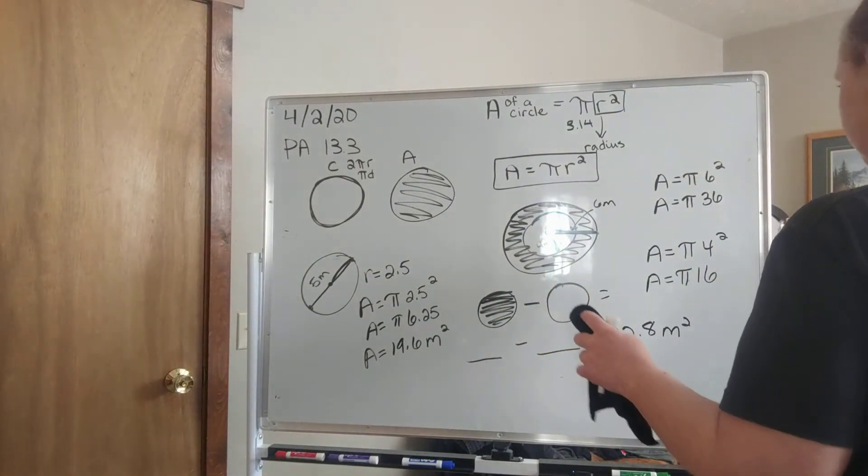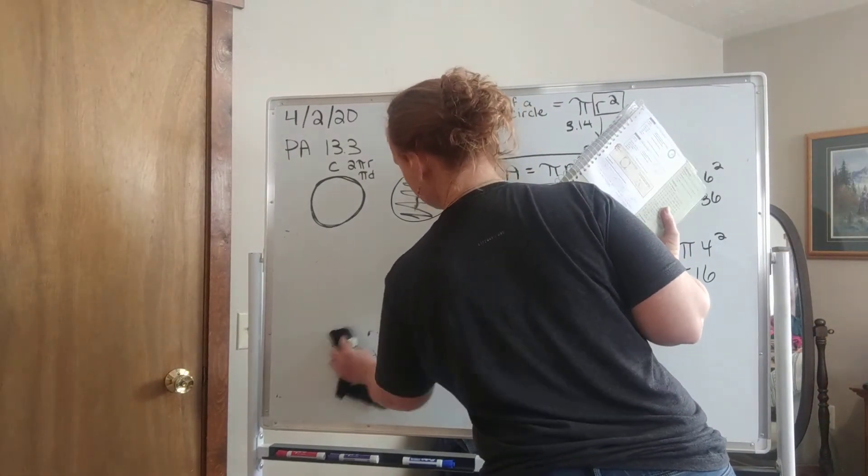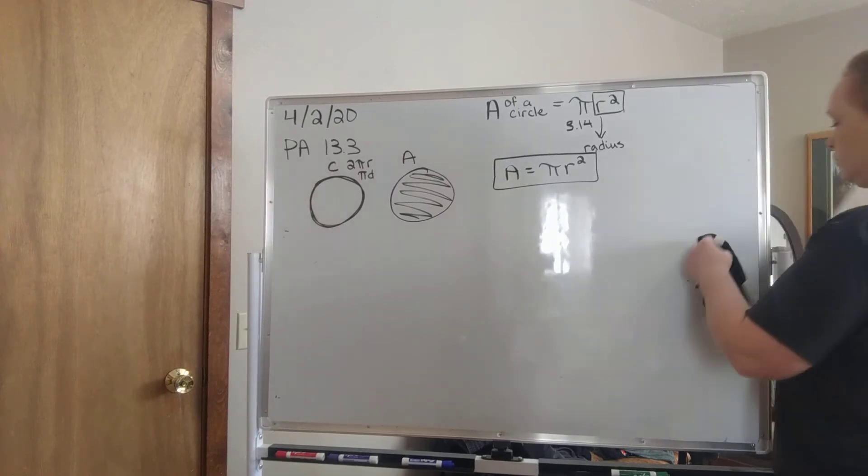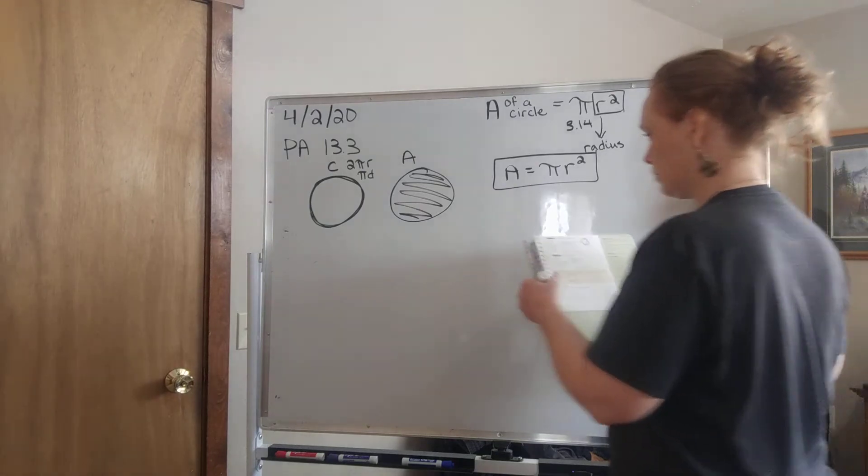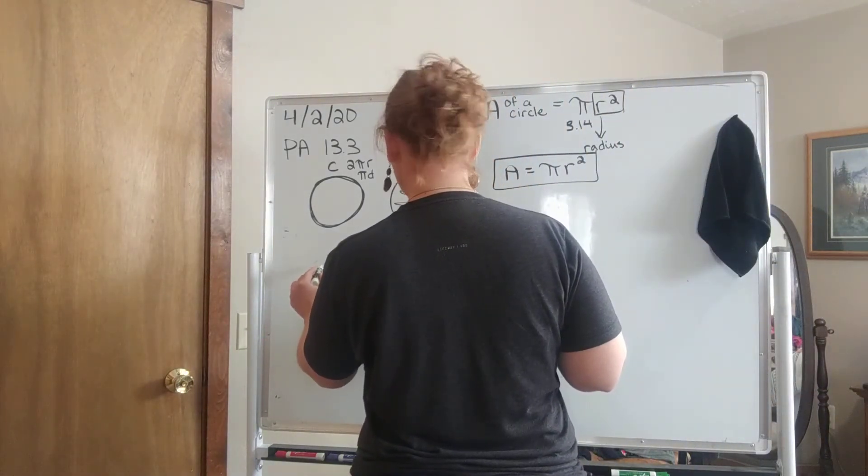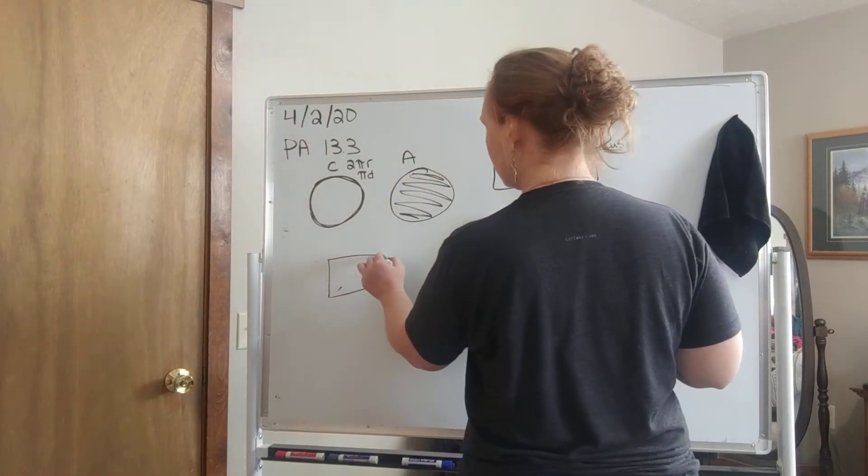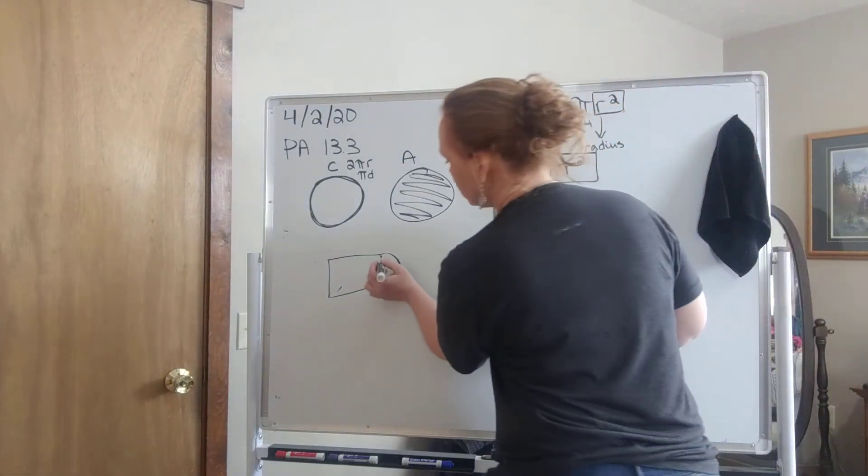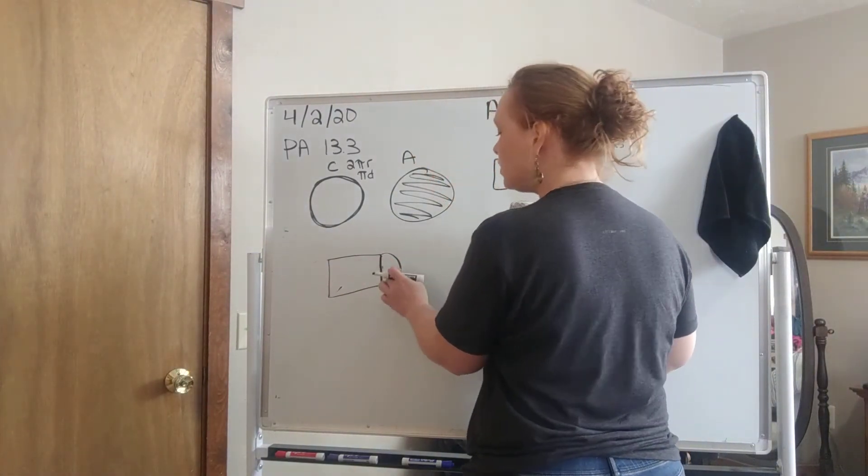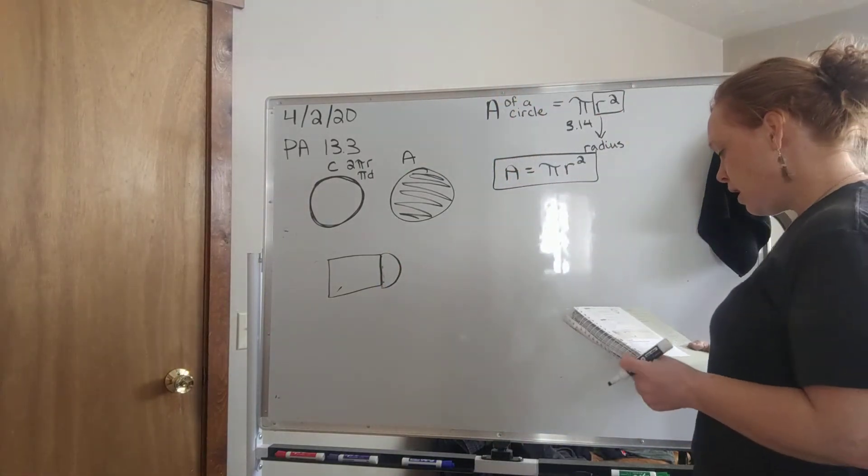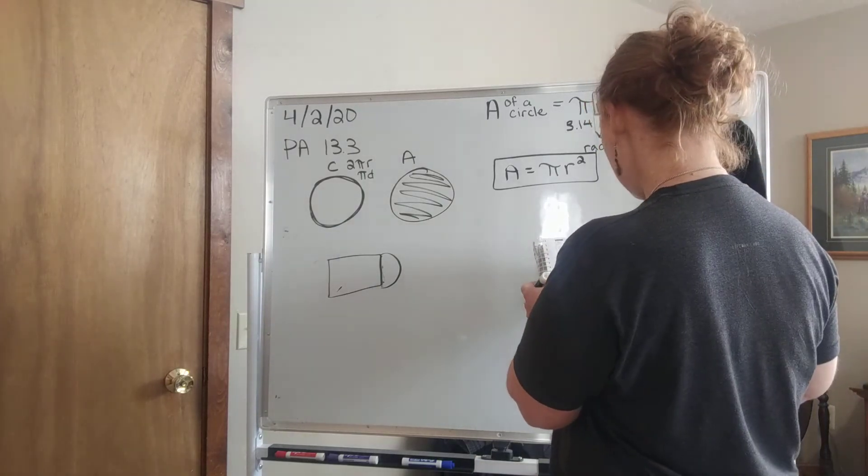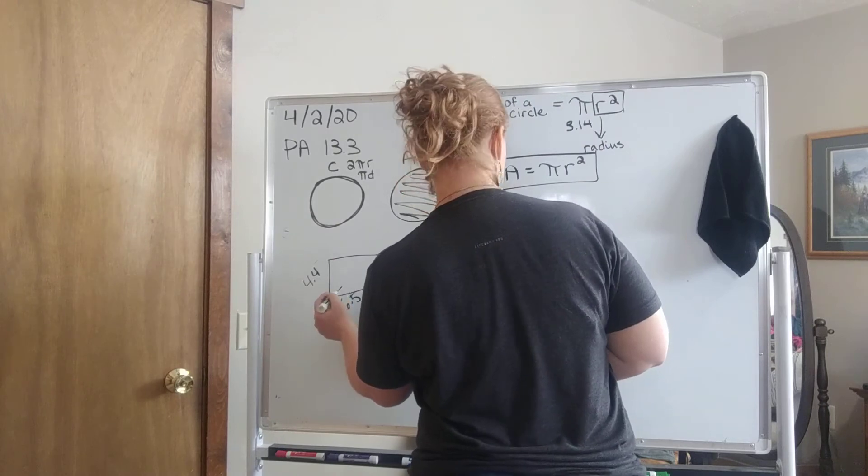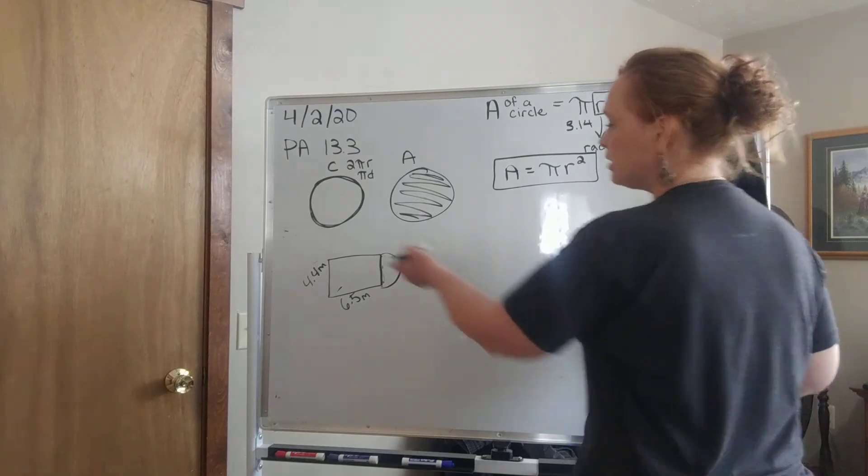Let's do example 4. So example 4 says find the area of this figure. It starts out as a rectangle and then ends in half of a circle. Can you see how that's kind of half of a circle? And they want us to find the area. So actually what I want to do is I want to find the area of this entire rectangle, and then I want to find the area of the circle and then just cut it in half. So let's find the area of the rectangle. So it says 4.4, and this is 6.5, and they're both measured in meters.